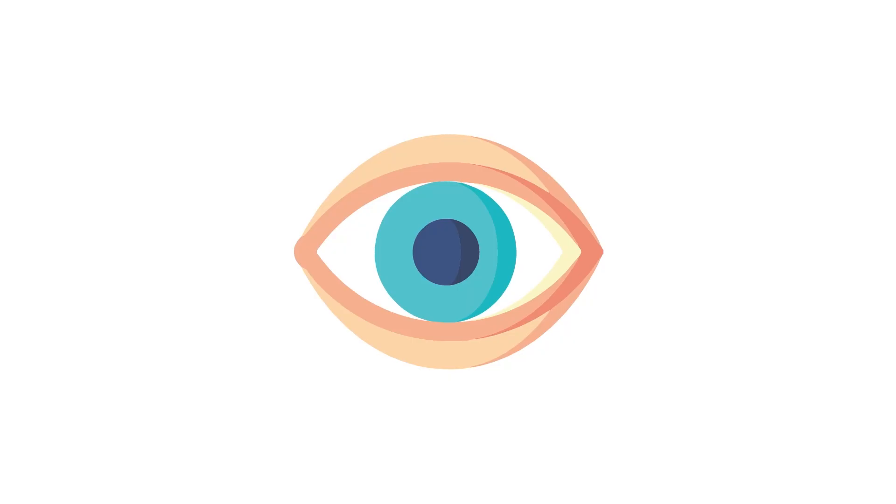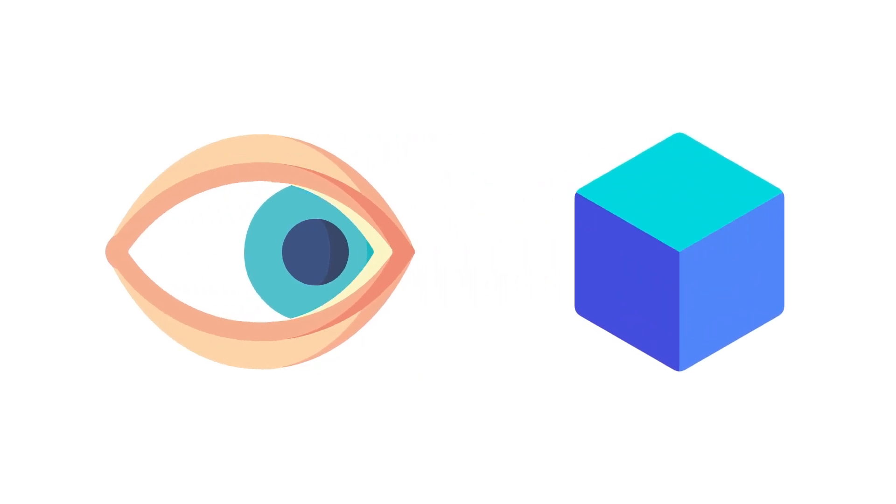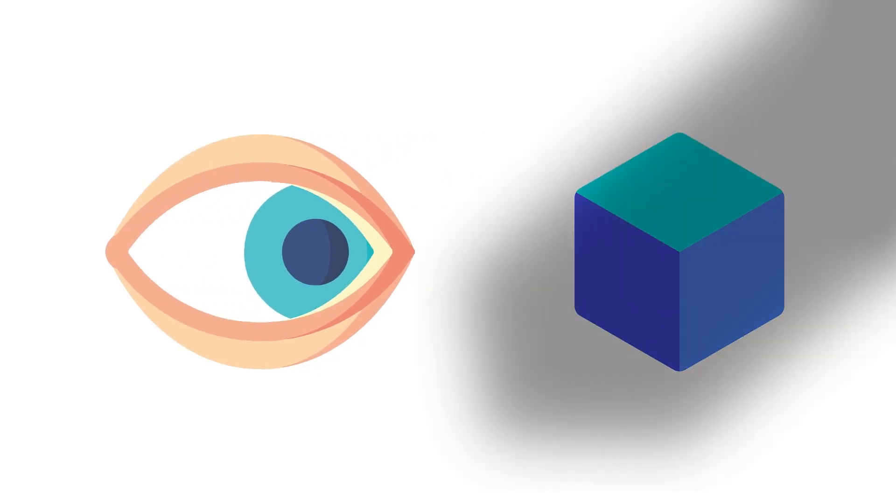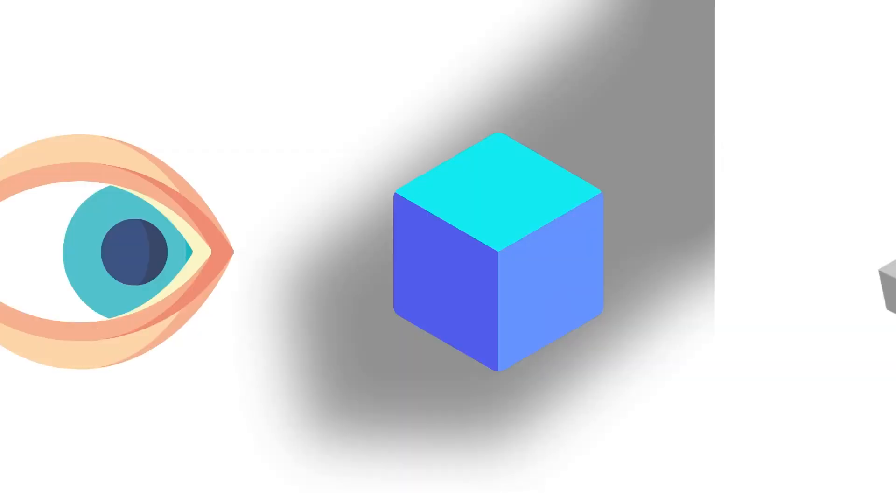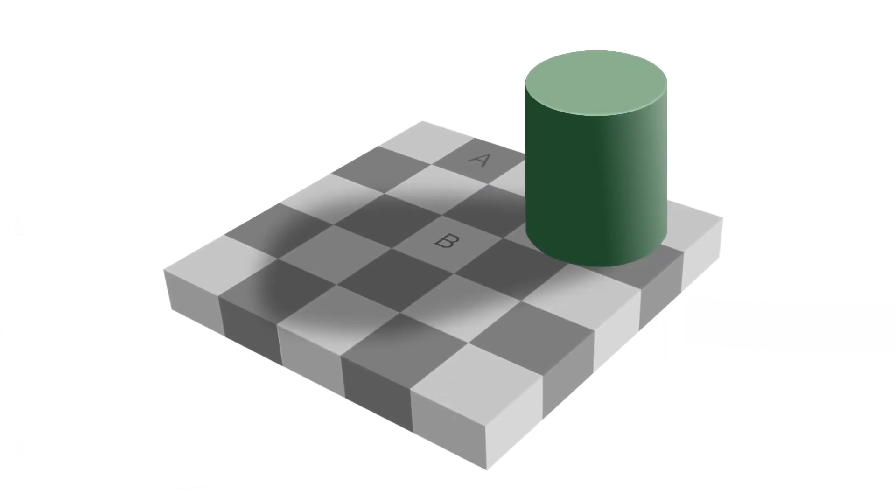Take visual perception, for example. Our minds automatically assume that things in shadow are lighter than they actually are. As a demonstration, look at this checker shadow illusion. Square A is not in any shadow, while square B is in the shadow of the cylinder. It looks like square B is a lighter shade of gray than square A, but it turns out that they are actually the same color.